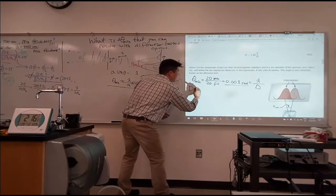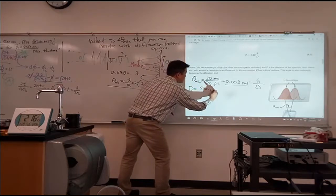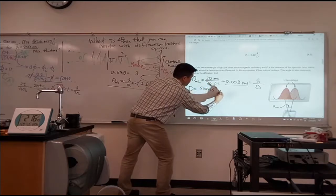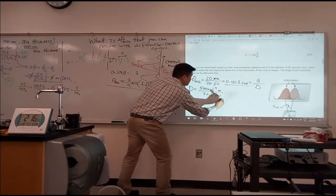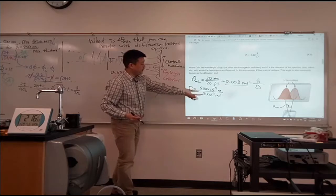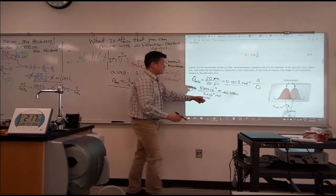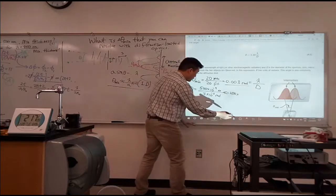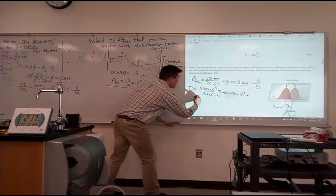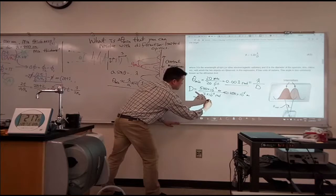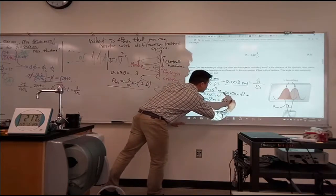So pupil size D is equal to wavelength. So 500 times 10 to minus 9 meters divided by that angular size, three times 10 to the minus 3 radians. So it's 500 divided by 3, approximately 200 times 10 to minus, over 10 to minus 3, so about 10 to minus 6 meters. So working out the units, it should be about 0.2 times 10 to minus 3 meters, or about 0.2 millimeters.